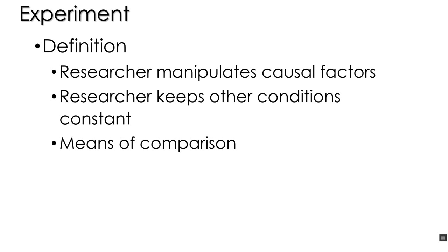The first thing we need to do is go over the definition of an experiment. There are three major components to the definition of an experiment: the first is that the researcher manipulates causal factors; the second is that the researcher keeps other conditions constant; and the third is that there is a means of comparison.